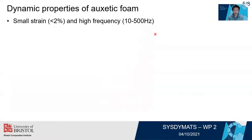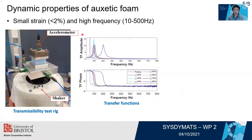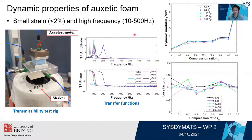We then studied the dynamic properties of the auxetic foam. First, with small strain and high frequency, we built a transmissibility test rig to measure auxetic foams with different parameters to obtain their transfer functions. From the transfer function, we can calculate the dynamic modulus and the loss factor of the auxetic foams with different parameters. We also built a polar elastic model to study the dynamic performance of this kind of porous material.